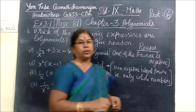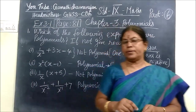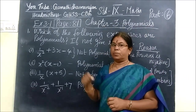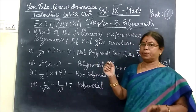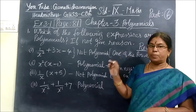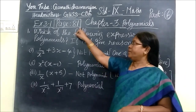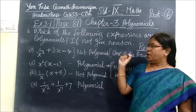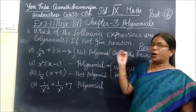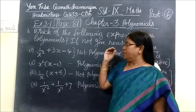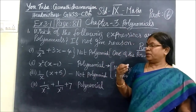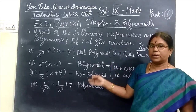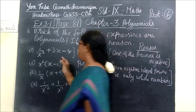Good evening students. Today we want to see 9th standard, SSA 3.1. We see the third chapter, polynomial, SSA 3.1, page number 81. You can see this sum in page number 81. We are talking about polynomials. The instruction part is given in the class itself. I am taking only the exercise problems.